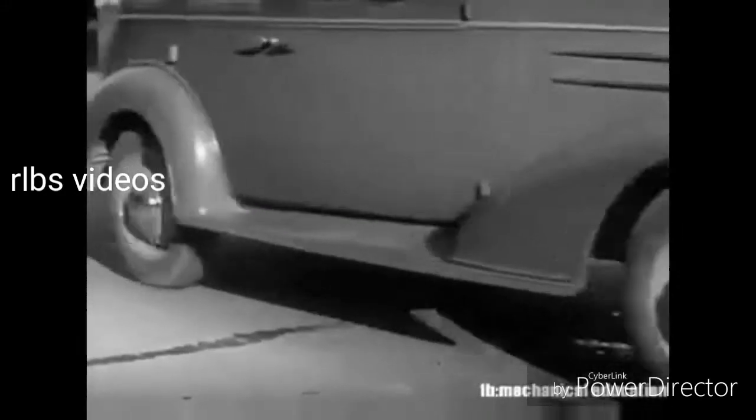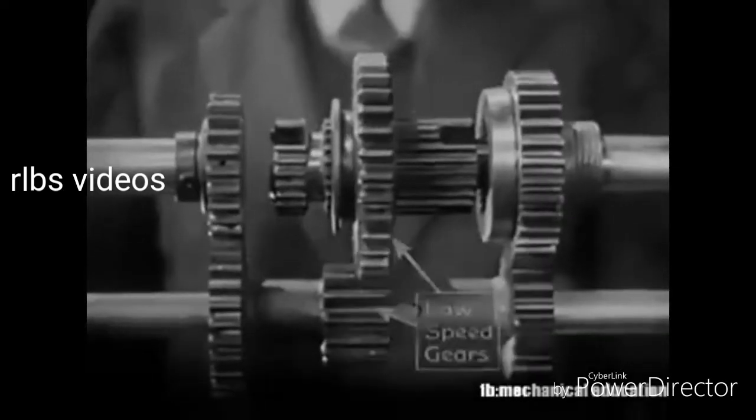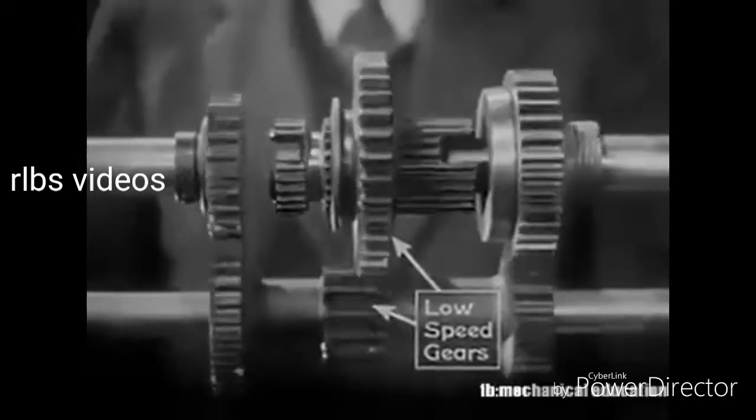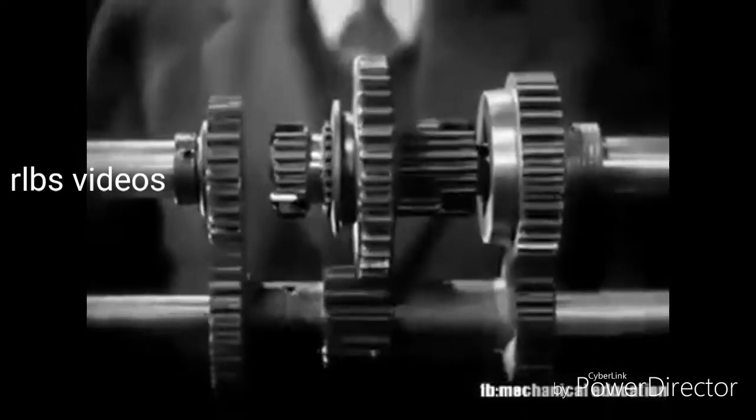A 3,000-pound automobile takes a lot of force to start. So, in low speed, we get the greatest leverage by letting the smallest gear on the counter shaft turn the largest gear on the drive shaft.